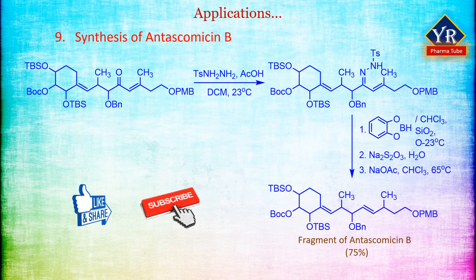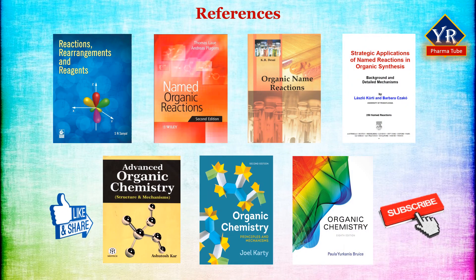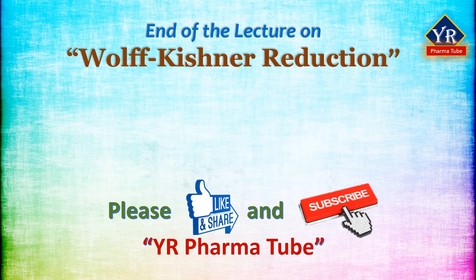Application 9 — Synthesis of Antoscomycin B: McIntosh et al. used an allylic diazine rearrangement in their synthesis of the C21 to C34 fragment of Antoscomycin B. The hydrazone was reduced selectively with catechol borane and excess reducing agent was decomposed with sodium thiosulfate. The crude reaction product was then treated with sodium acetate and heated under reflux in chloroform to give the 1,4-syn isomer. This is the list of references followed for the lesson. That is all in this video on Wolf-Kishner reduction reaction. In the next lesson, we will discuss the Oppenauer oxidation reaction. Till then, never stop learning. Thank you for watching.